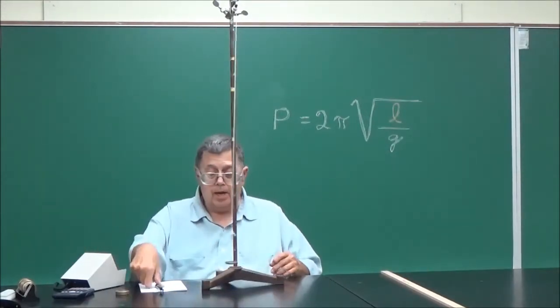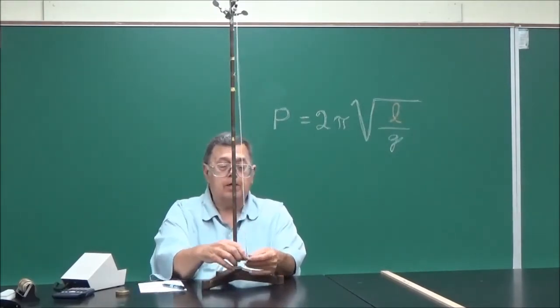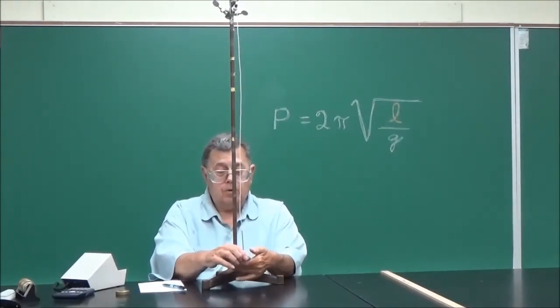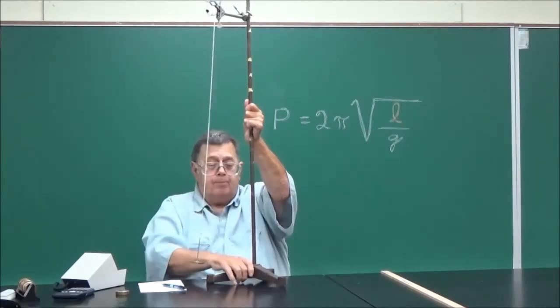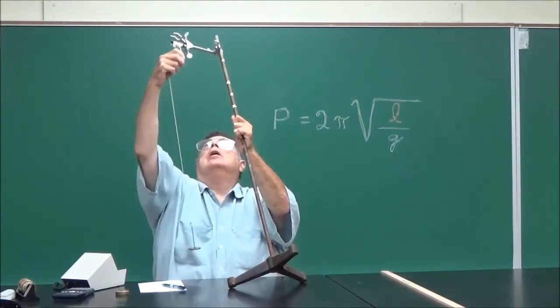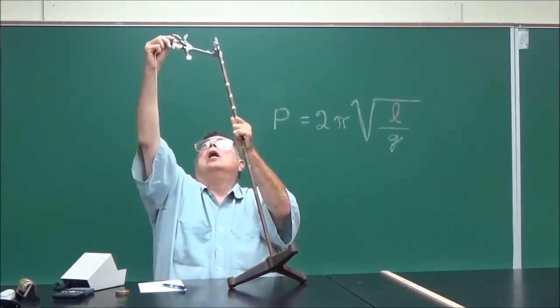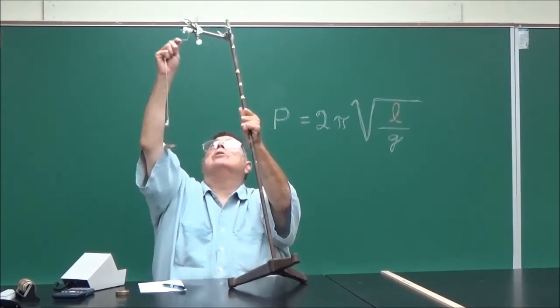So we're right about the same all the time without changing the mass or the swing angle. Now I'll leave one mass on, we're going to do something by shortening the period. We're going to shorten the length, actually.